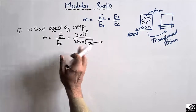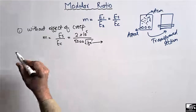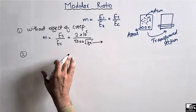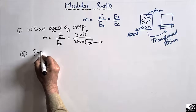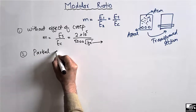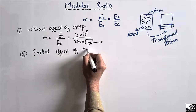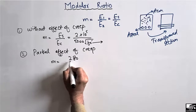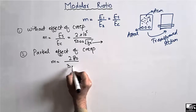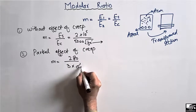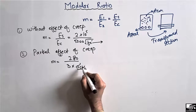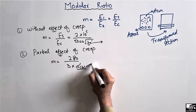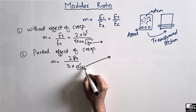There is a second formula where we consider the partial effect of creep. When we consider the partial effect of creep, we use the formula: m = 280 / (3 × σcbc), where σcbc is the permissible compressive stress in concrete in bending. This value varies depending on the strength of the concrete.